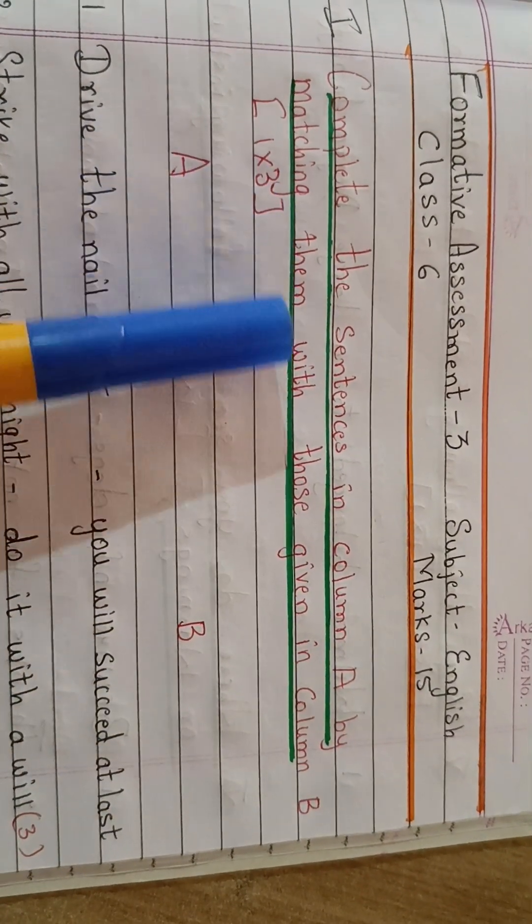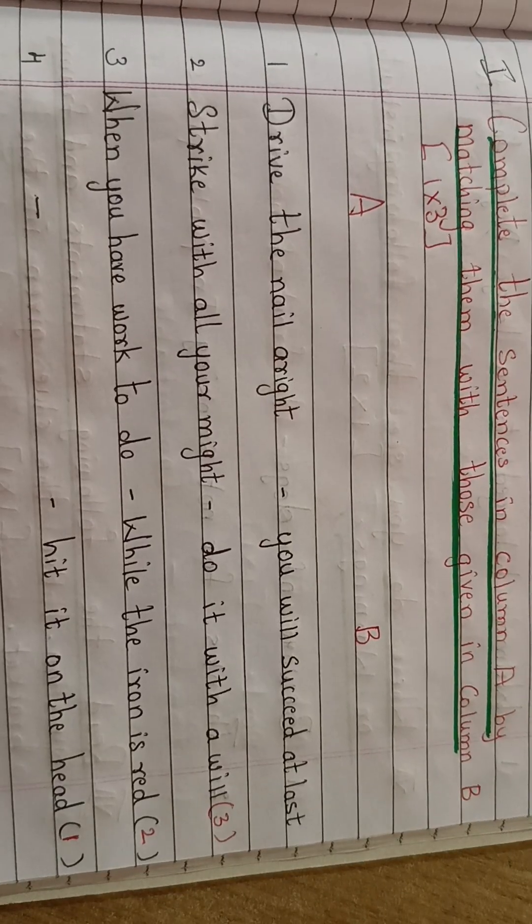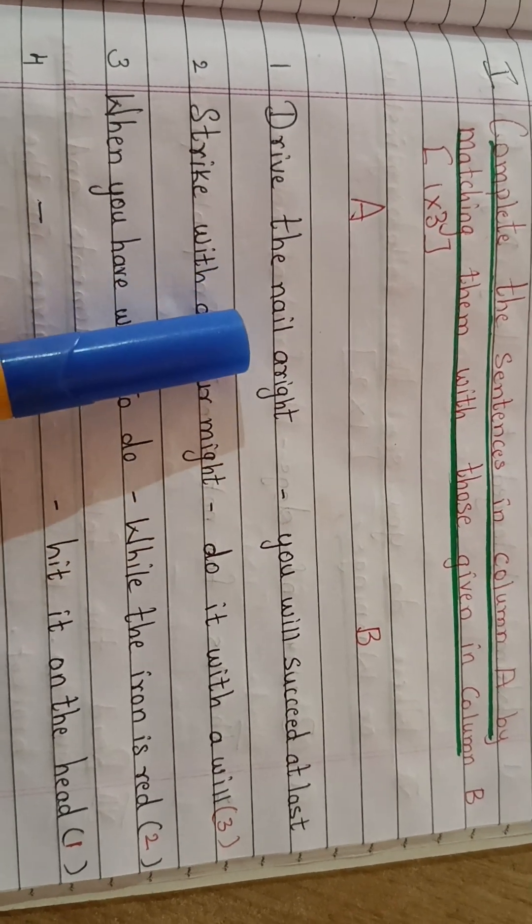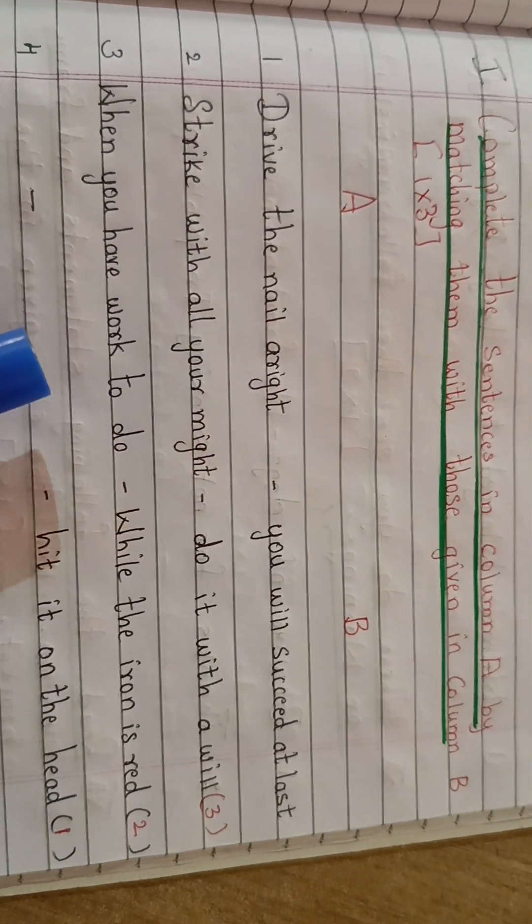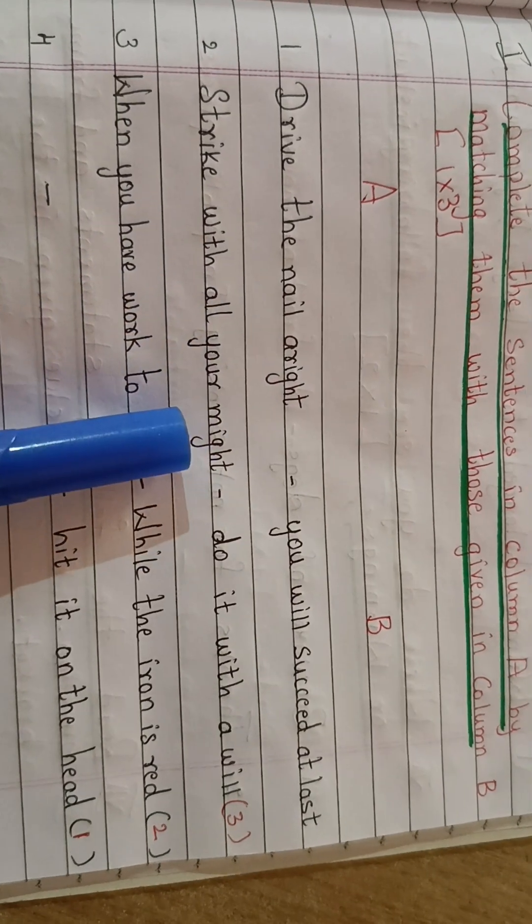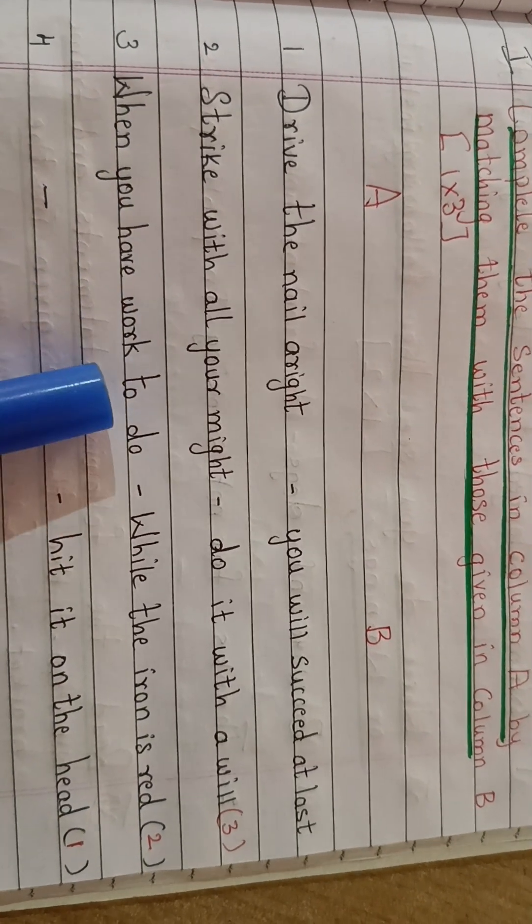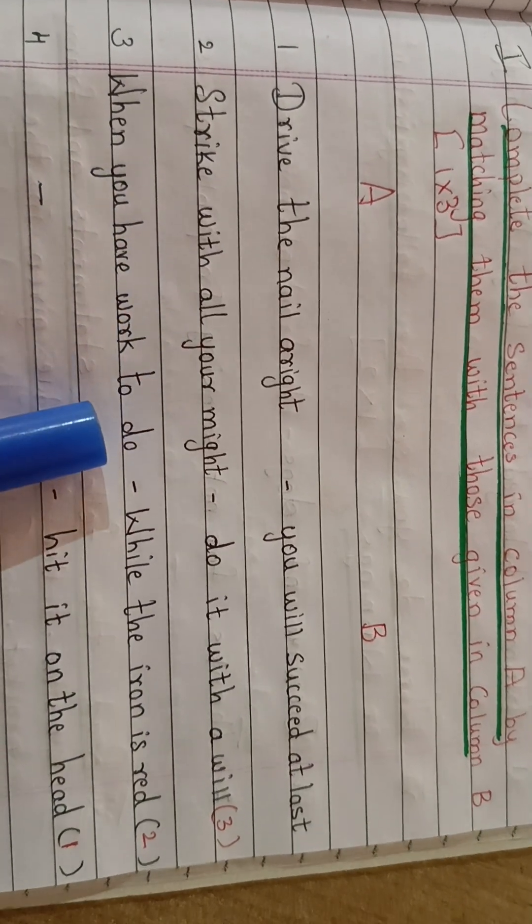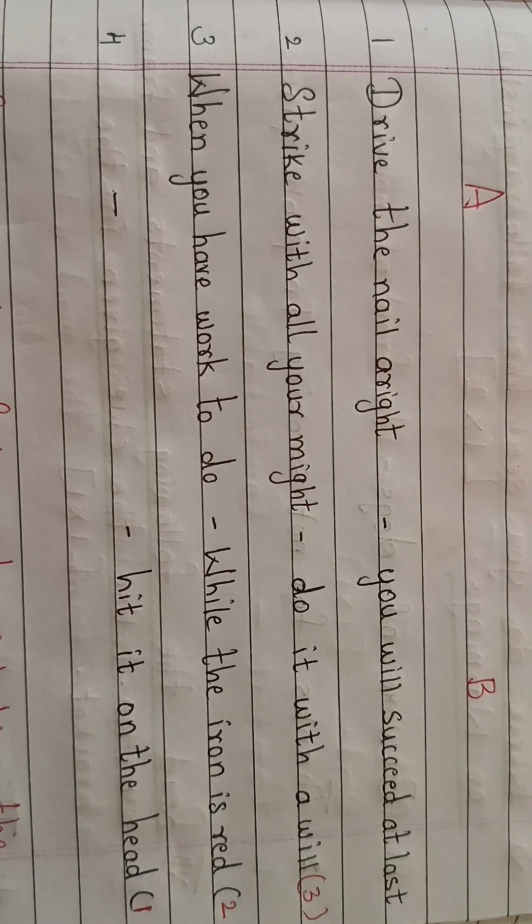Complete the sentence in column A by matching them with those given in column B. So this is the first main question. Let's match now. Drive the nail, alright. So we have to match this with B. Drive the nail, alright. The answer for this is hit it on the head. Second one: strike with all your might. The answer is while the iron is red. When you have work to do, do it with your will. So this is the third one. You find the questions along with the answers.